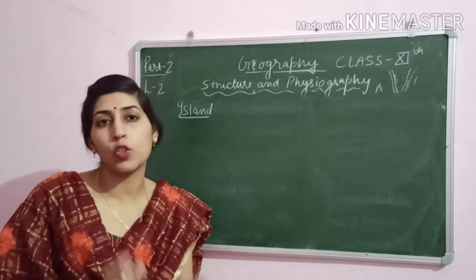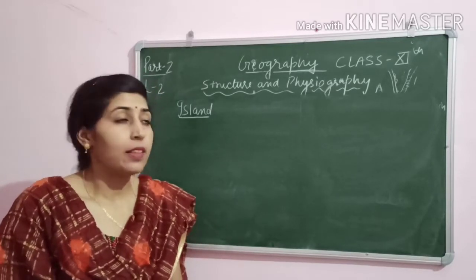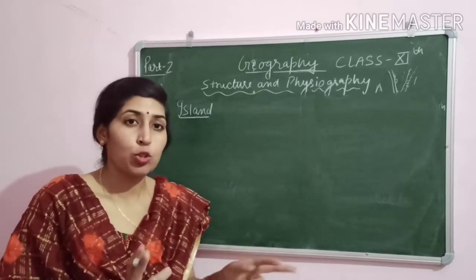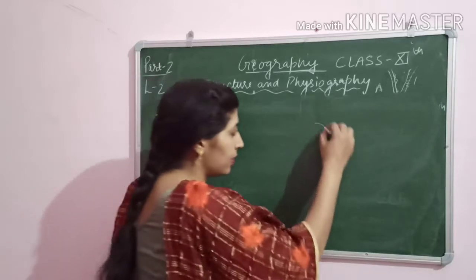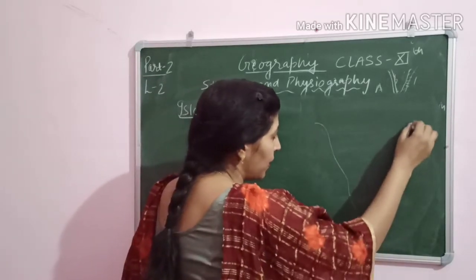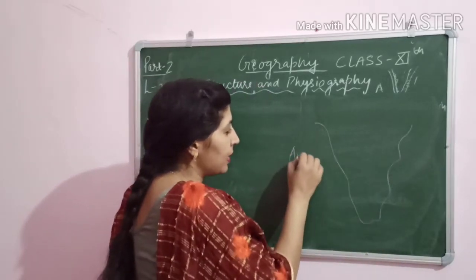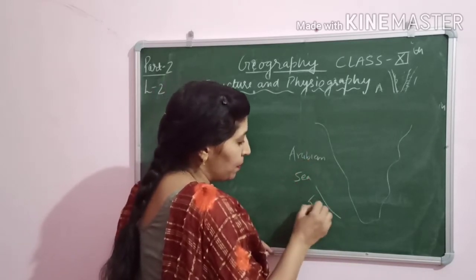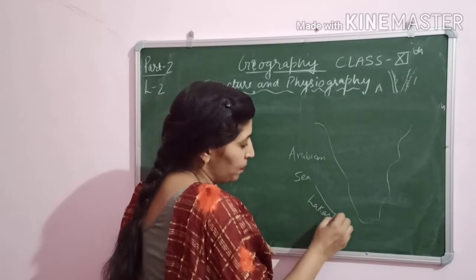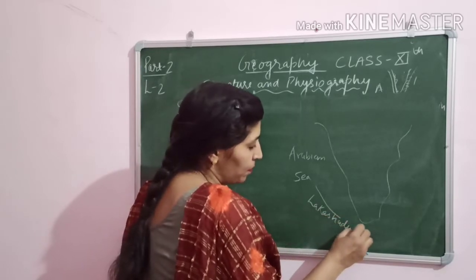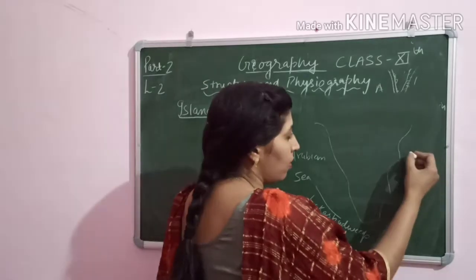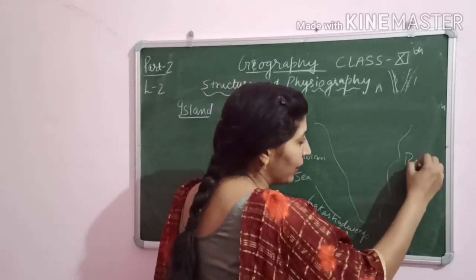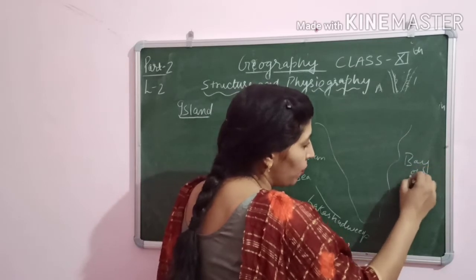Now we will discuss the last physiographic division of India: the island groups. India has two groups of islands — one group is in the Arabian Sea, which is Lakshadweep, and another group is in the Bay of Bengal, which is the Andaman and Nicobar Islands.